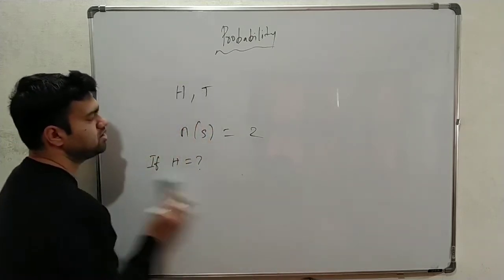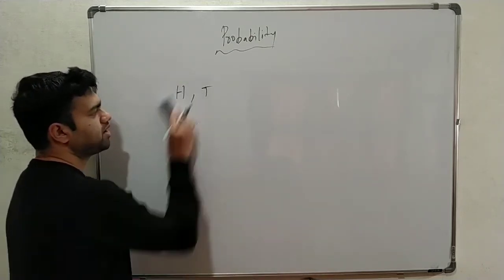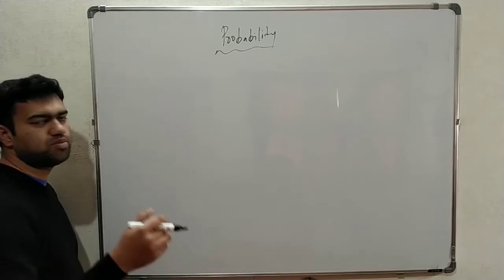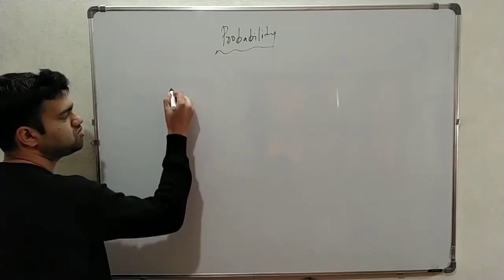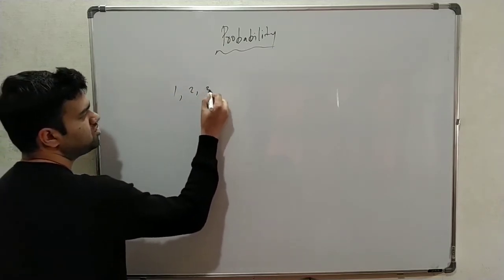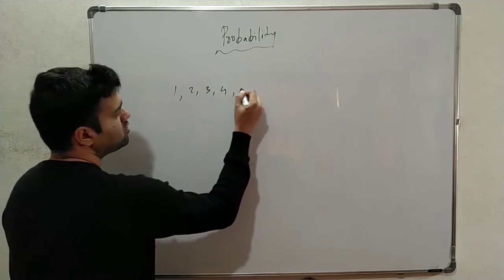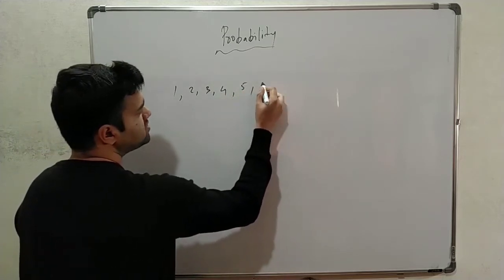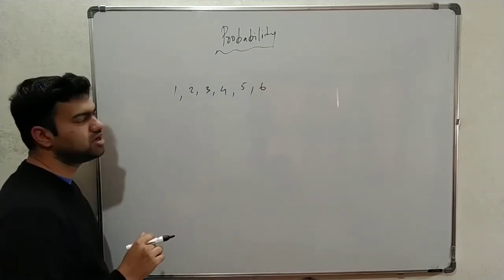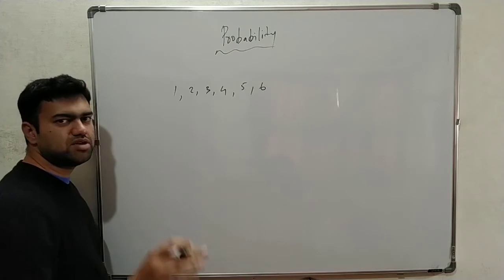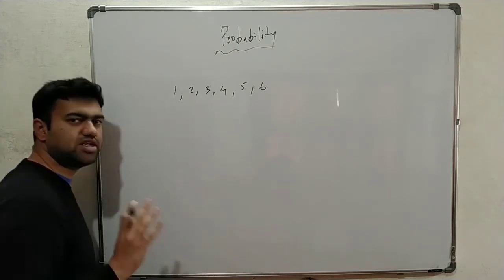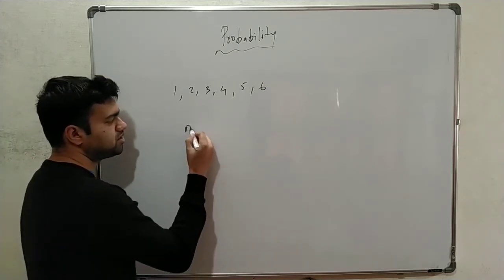Now let's look at the dice example. A dice has 1, 2, 3, 4, 5, 6. So there are 6 sides and 6 numbers. Total sample space is 6 numbers. Sample space is equal to 6.